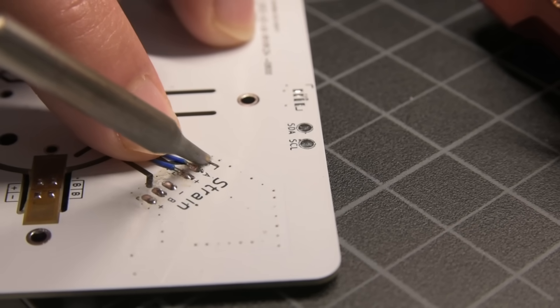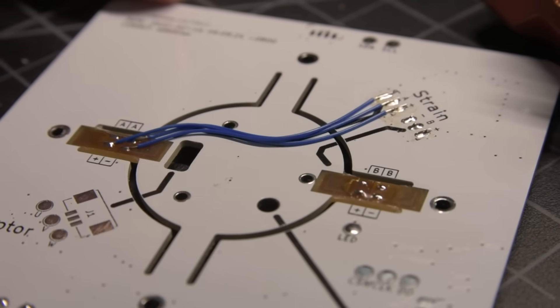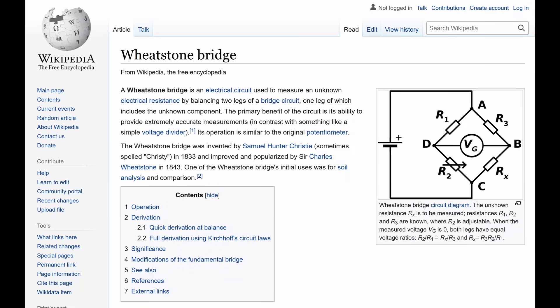The strain gauges get wired up to a few pads on the PCB, which connect to the high-resolution ADC I mentioned earlier. The reason for having four strain gauges is to form what's called a Wheatstone bridge. Essentially, it makes the strain gauge readings less sensitive to temperature effects.